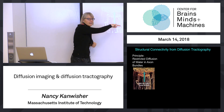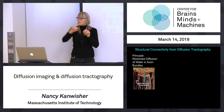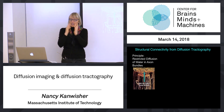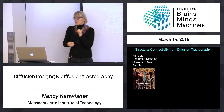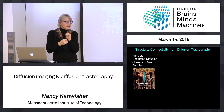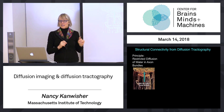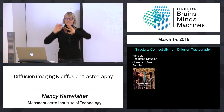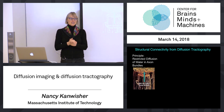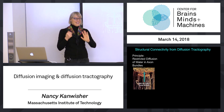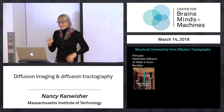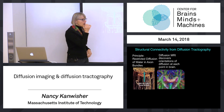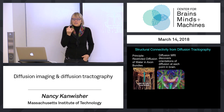The upshot of all that is that water likes to diffuse more along the fiber direction than orthogonally to it. That's the key idea of diffusion imaging — it tells you which direction water is diffusing most. Water is constrained by the fat layers around those axons, that myelin, so you get diffusion more along the fiber than perpendicular to it. What you get out is a picture at each point in the brain of what is the direction of maximum diffusion at that point.